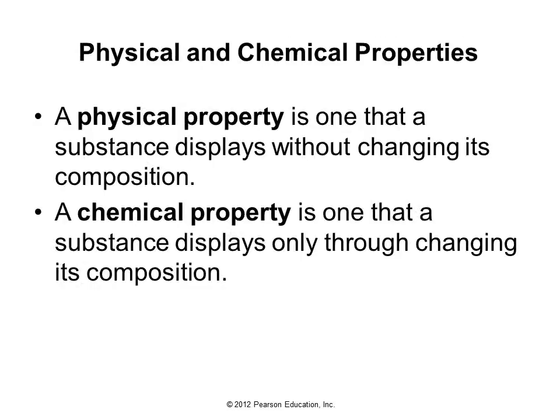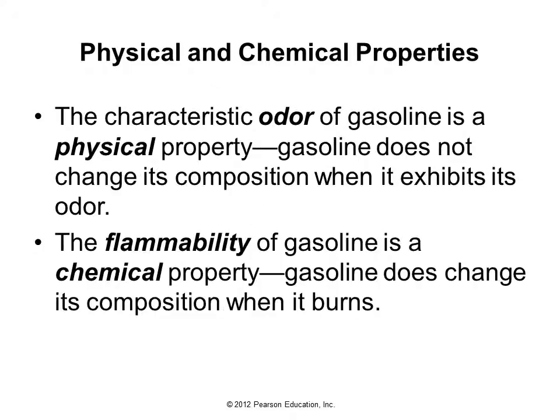Substances have chemical properties and physical properties. A physical property is one that is displayed without changing their composition. A chemical property is one that is displayed by changing its composition. For instance, the odor of gasoline is a physical property, while the flammability of gasoline — it will burn and combine with oxygen — is a chemical property.